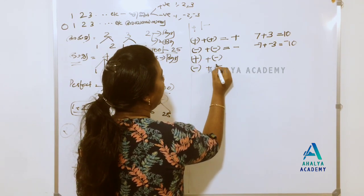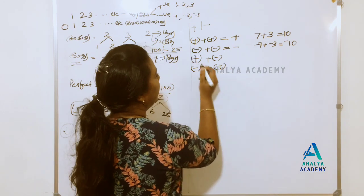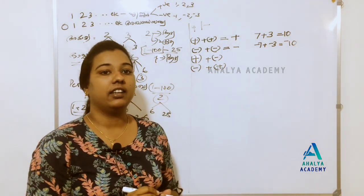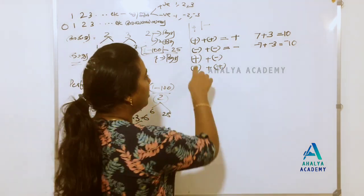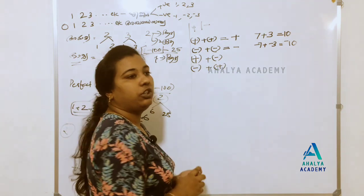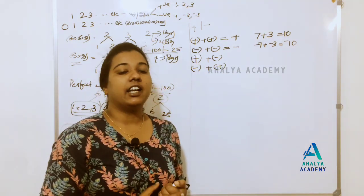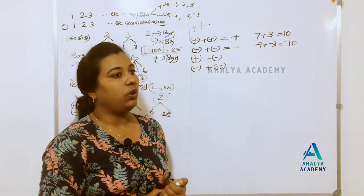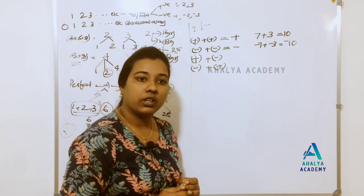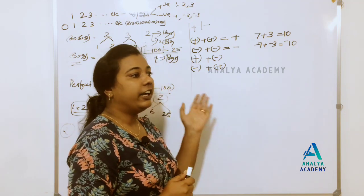Now, how can you change the number? One number is positive and one is negative. In this case, you will change the number — the result becomes negative.